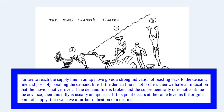If the demand line is not broken, then we have an indication that the move is not yet over. If the demand line is broken and the subsequent rally does not continue the advance, then this rally is usually an up thrust. If this point occurs at the same level as the original point of supply, then we have a further indication of a decline.